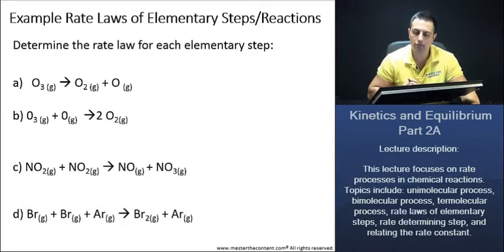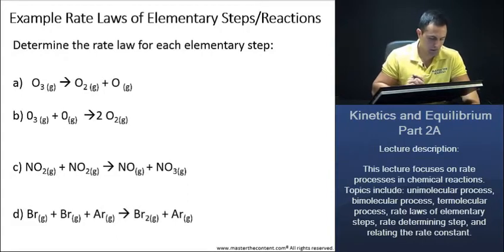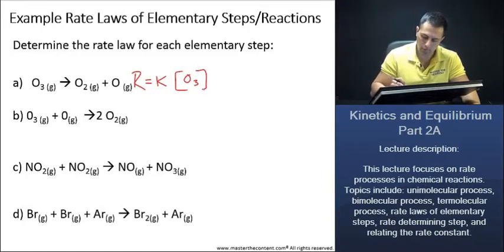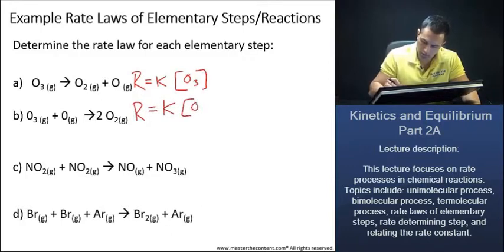Example rate laws of elementary steps reactions. Determine the rate law for each elementary step. Let's take a look here at ozone first. And the rate law for ozone, I'm just going to put R in for rate law, is just going to be that. Now for our second one, our rate law here is just going to be concentration of ozone and oxygen here. Great.